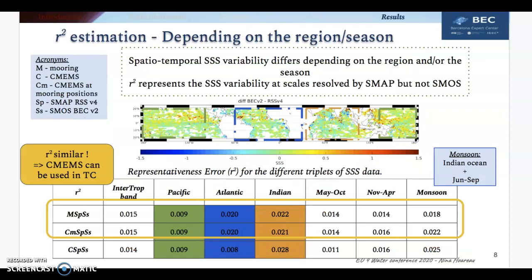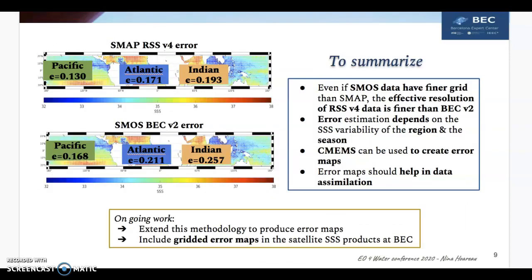Now we want to verify the influence of the spatio-temporal variability of SSS on the R-square value. We separate the dataset for different ocean regions and different periods of the year, and estimate the R-square for three triplets with mooring, model, and model at mooring position. We see that the R-square value depends on the region and the season, and the R-square values are similar independently of the sources, meaning that the model can be used to create gridded error maps for SMOS and SMAP. Here are presented examples of error estimation for SMAP and SMOS using these methods for various ocean basins in the tropical bands.